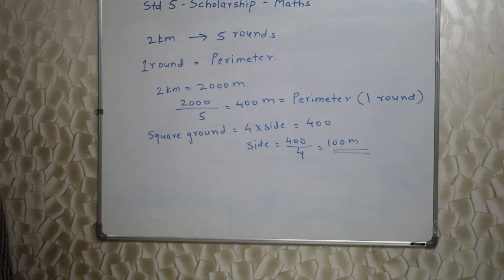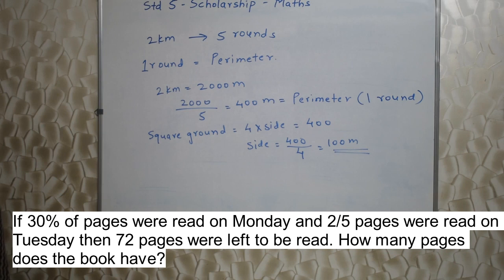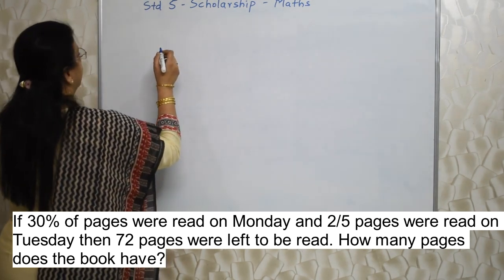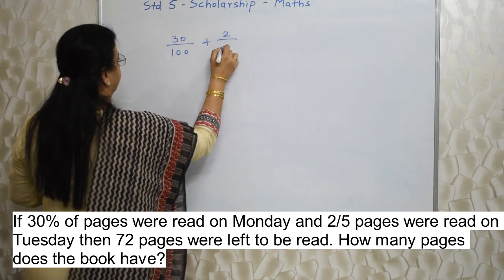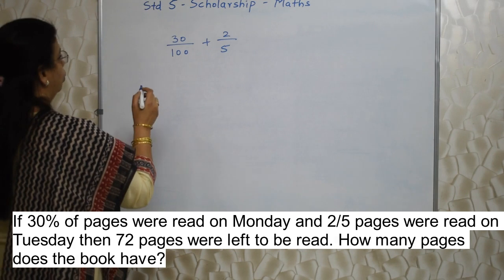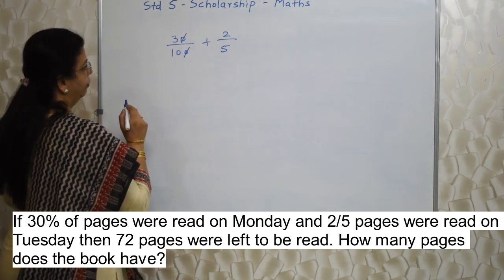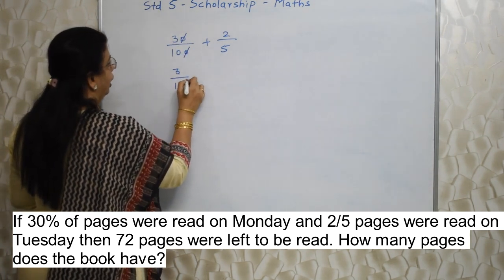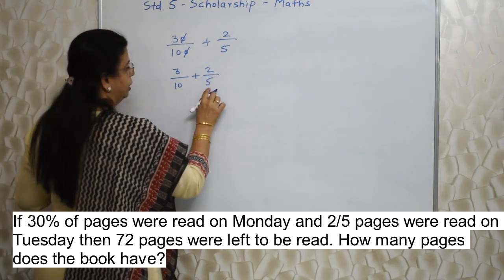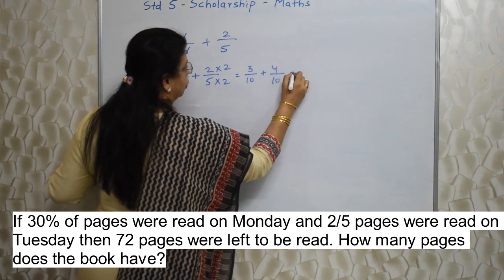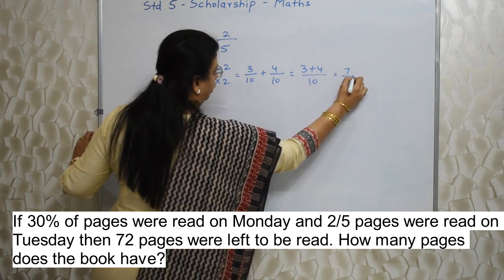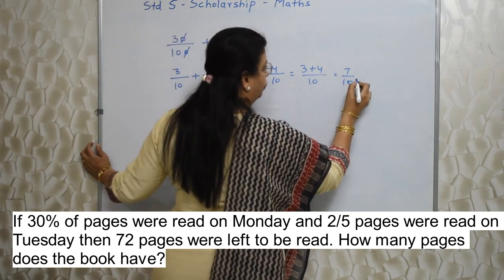Next sum: If 30% of pages were read on Monday, 2 upon 5 pages were read on Tuesday, and then 72 pages were left to be read, how many pages does the book have? First find how many pages were read: 30% means 30 upon 100, which simplifies to 3 upon 10. Adding 3 upon 10 plus 2 upon 5 — making the denominator 10 gives 3 upon 10 plus 4 upon 10, which equals 7 upon 10.